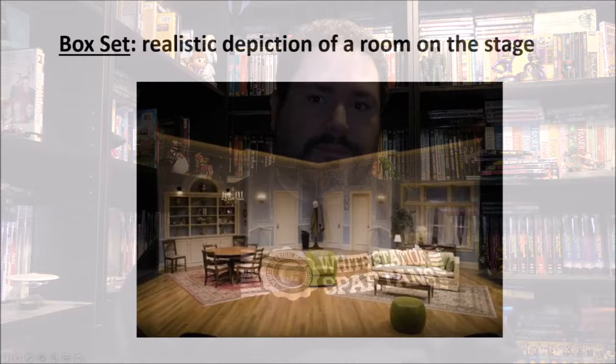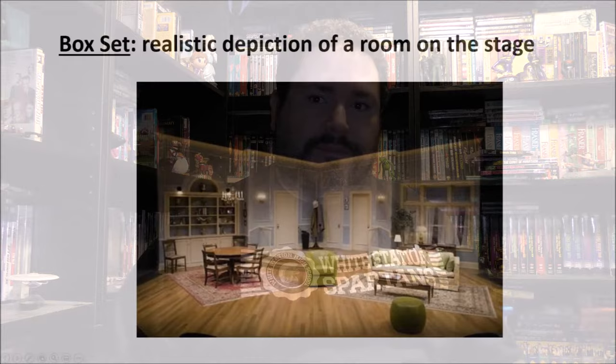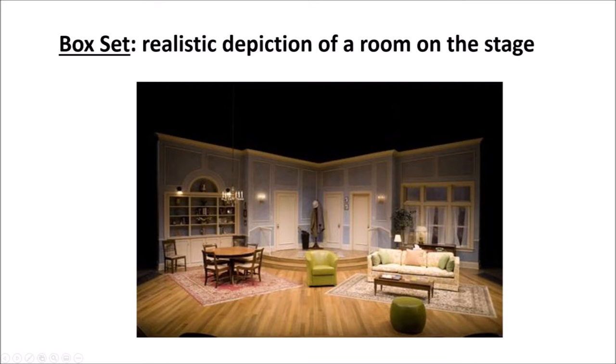There are three major types that we are going to be concerned with here. The first type of set I want you to familiarize yourself with is called a box set. This is a realistic depiction of a room on the stage, used in shows where you have one primary location. It gets its name because it's usually used in proscenium theaters — the back walls of the set form three sides of the box, with the opening where the audience can view in serving as the invisible fourth wall.